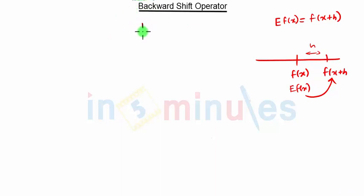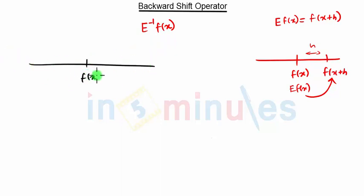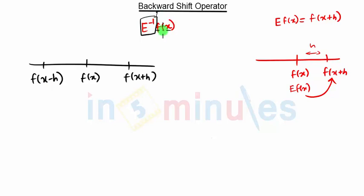The backward shift operator is represented by E⁻¹ of f(x), so we will shift f(x) backwards. If we have the line here and this is our f(x), then forward will be f(x+h), and backward will be f(x-h). So E⁻¹ of f(x) is nothing but the backward term, that is f(x-h). This is the backward shift operator.